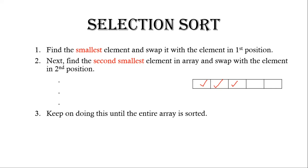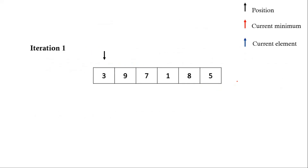We repeat this process until our entire array is sorted. To do this we will use three pointers: one is the position pointer, one is current minimum, and one is current element. These pointers store the index of the array, not the actual element. The position pointer covers the position for which we find the smallest element. Current minimum stores the index of the smallest element found. The current element (blue pointer) is used to scan the array from left to right, to find an element smaller than the current minimum.